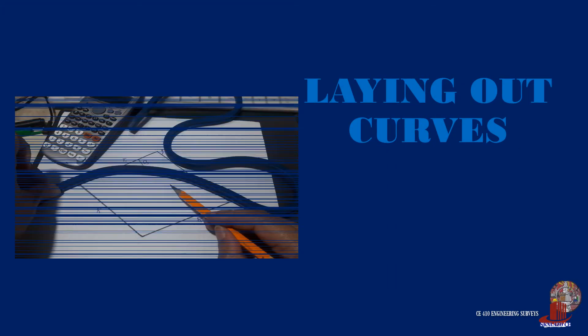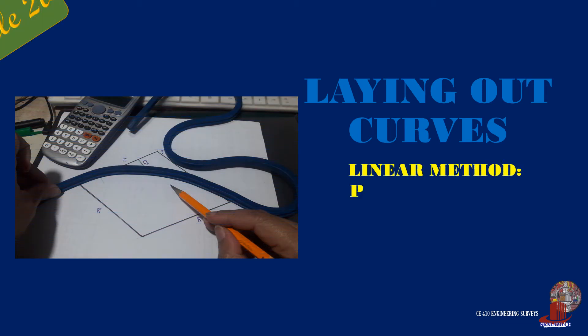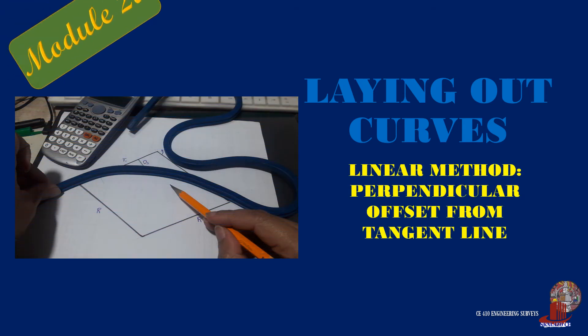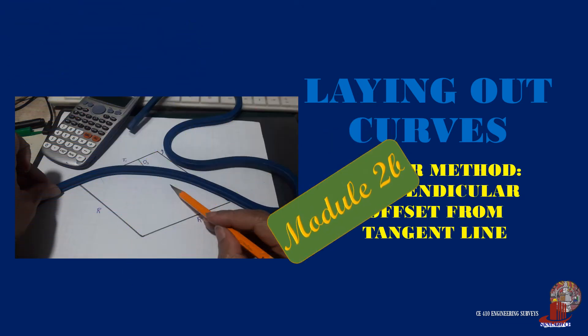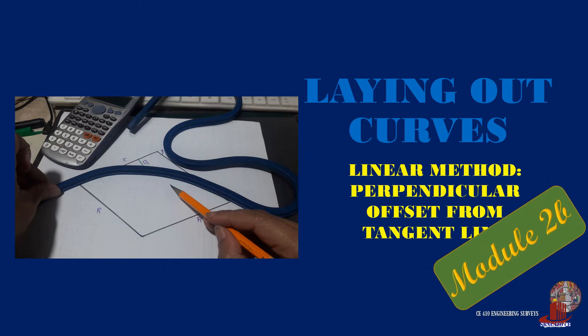Perpendicular offset from the tangent line is a linear method using the tangent line T. It is one of the two methods using the element. Learn how to lay out curves using this method in engineering surveys.